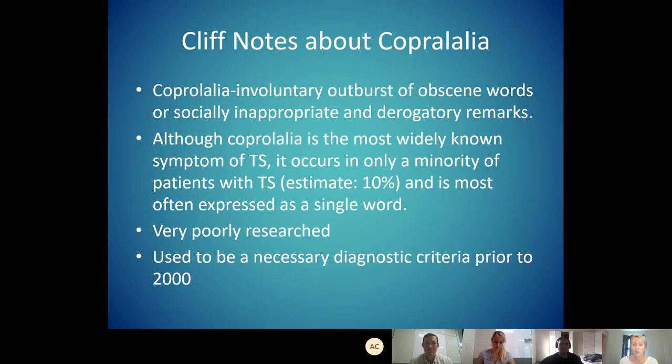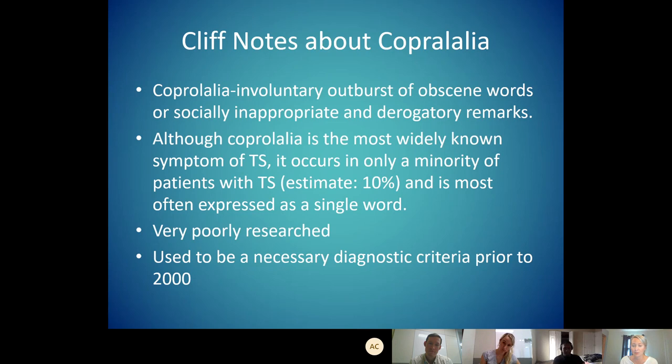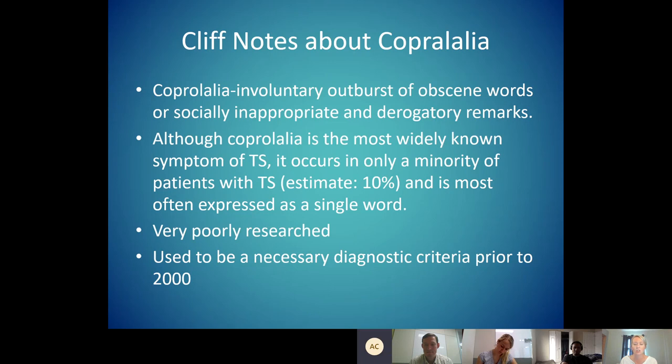A cliff note about coprolalia: that's the technical term for that involuntary outburst of obscene words. Although it's the most widely known symptom of Tourette syndrome, it only occurs in about 10% of patients. It's very poorly researched — if you're looking for a research project, you could probably get a seminal paper studying coprolalia. Prior to the year 2000, you had to have coprolalia to meet criteria for Tourette syndrome, so there is an entire generation of patients walking around who have Tourette syndrome but had no diagnostic home. That's heartbreaking.